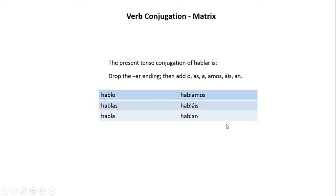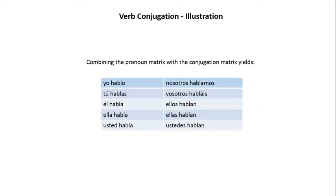Now let's move ahead to the next slide, and I'll show you how this can be expanded. In this slide, we combine the pronoun matrix with the conjugation matrix. As you may recall, the pronoun matrix was discussed in Module 3. We're going to marry that concept with the conjugation matrix we just reviewed. So, when we do that, here's what we get: yo hablo, tú hablas, él habla, ella habla, usted habla, nosotros hablamos, vosotros habláis, ellos hablan, ellas hablan, and ustedes hablan.